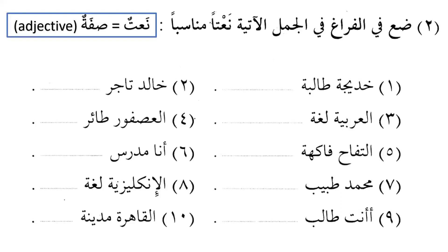Now we move to exercise number two: 'Da'' — meaning 'put' — this is fi'l al-amr, a command, and the ending of the verb in commands is always sakin. Da' fi al-faragh — put in the blank. Fill al-jumali al-atiyati — in the following sentences. Fill the blanks in the following sentences.